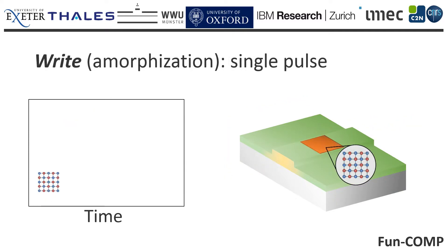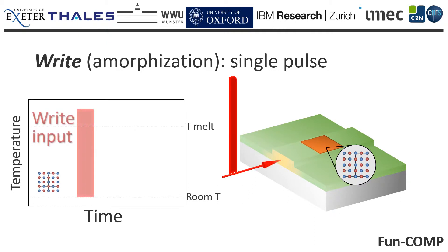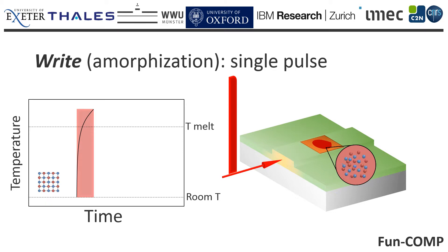Starting from a crystalline optical cell, we can write information or amorphize via a high power pulse delivered through the same waveguide. The energy absorbed by the optical cell locally increases the temperature beyond melting point, so melting the phase change material.